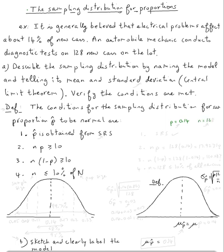An automobile mechanic conducts diagnostic tests on 128 new cars on the lot. So n is equal 128. Question A, describe the sampling distribution by naming the model and telling its mean and standard deviation. In other words, use the central limit theorem. And also verify the conditions are met.